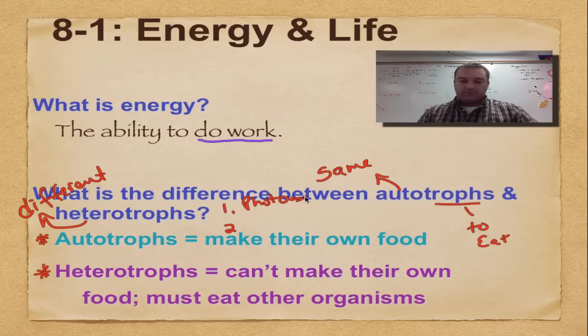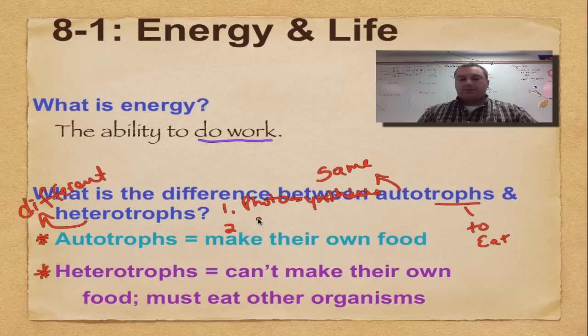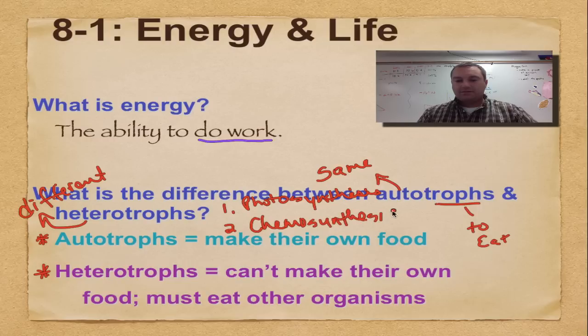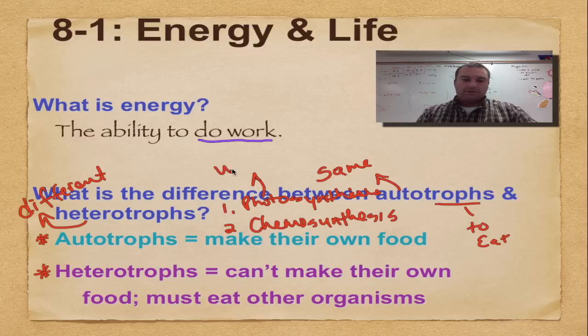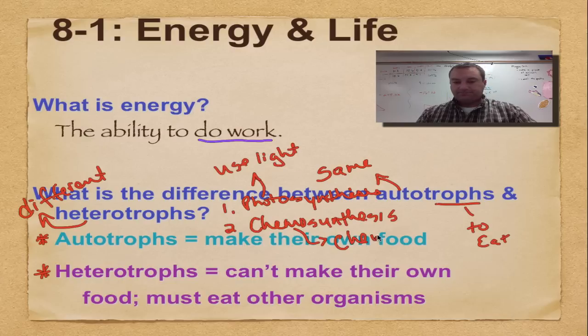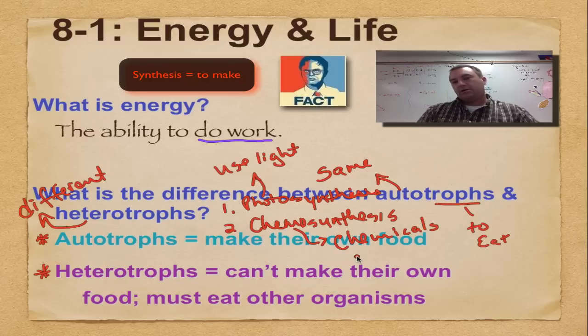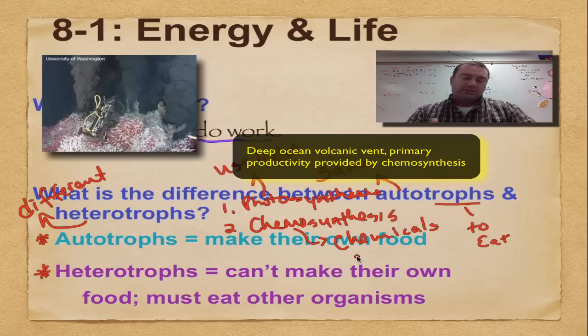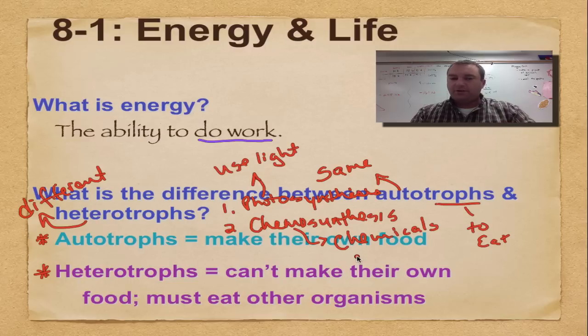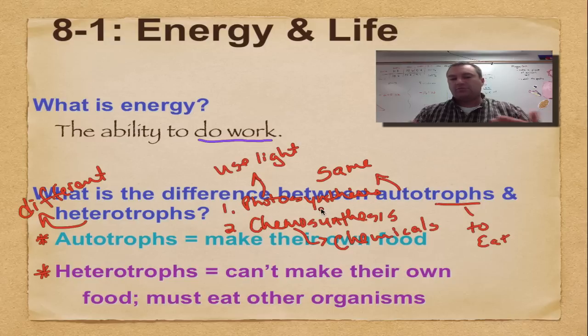Autotrophs make their own food through one of two things: photosynthesis, which is what this chapter is about, or chemosynthesis. Photo means you're using light to make your food, and chemo means you're using chemicals, typically from volcanic activity. Chemosynthesis occurs deep in the ocean at volcanic vents. Doesn't happen a lot on this planet, but when it does it's pretty important and pretty cool. Almost everything at the bottom of a food chain starts with photosynthesis, through plants.